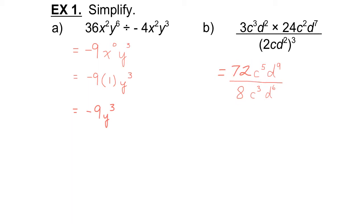Now we divide the numerator by the denominator. 72 divided by 8 is 9. c to the 5 divided by c to the 3 — subtract the exponents: 5 minus 3 is 2. d to the 9 divided by d to the 6 — subtract the exponents: 9 minus 6 is 3. So we end up with 9c to the exponent 2, d to the exponent 3.